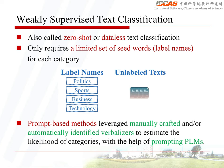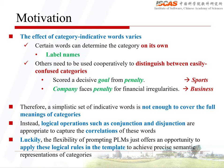In recent times, prompt-based methods have leveraged manually crafted and/or automatically identified verbalizers to estimate the likelihood of categories with the help of prompting PLMs. However, they fail to differentiate the effect of category-indicative words.